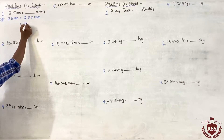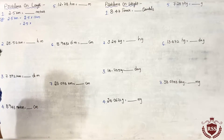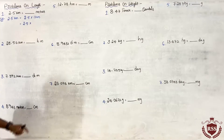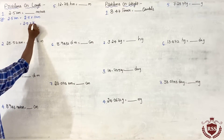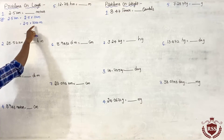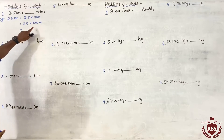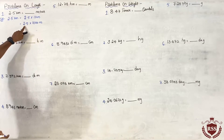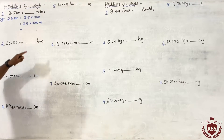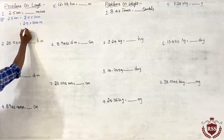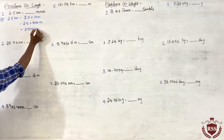2.5 into 1 kilometer — we have to convert this 1 kilometer into meters. 1 kilometer equals how many meters? 1000 meters. We have learned that 1 kilometer equals 1000 meters. So we are replacing this 1 kilometer with 1000 meters. If we multiply 2.5 with 1000, the decimal point will be removed. It will be 2500 meters.